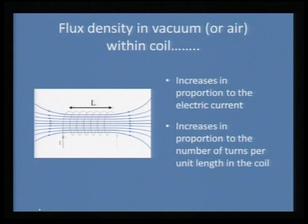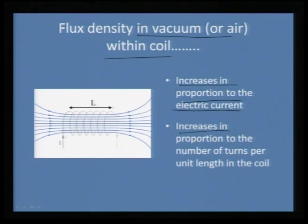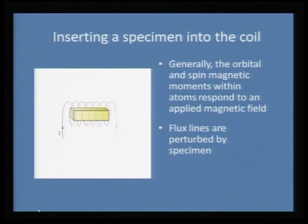Flux density actually can be generated in vacuum within the coil. It increases in proportion to the electric current and also in proportion to the number of turns per unit length in the coil — that would give you the strength of your electromagnet. Once you keep a specimen inside the solenoid, the response of the material to the solenoid will actually determine the magnetization. Generally, the orbital and spin magnetic moments within the atoms respond to the applied magnetic field and the flux lines are actually perturbed by the specimen. How the flux is either allowed to pass through the material or repelled determines what set of material you have.